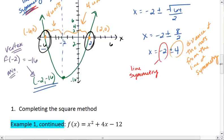So if we were to go back up here, we should have points at 0, negative 12, and at negative 4, negative 12.